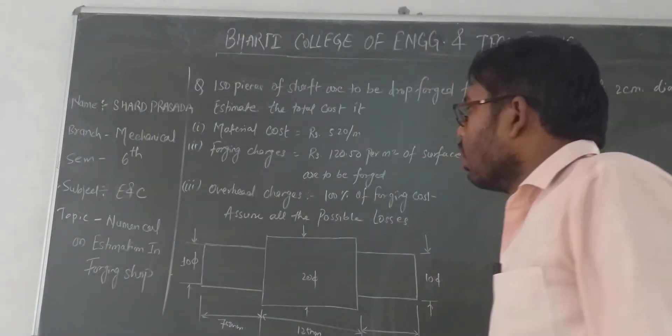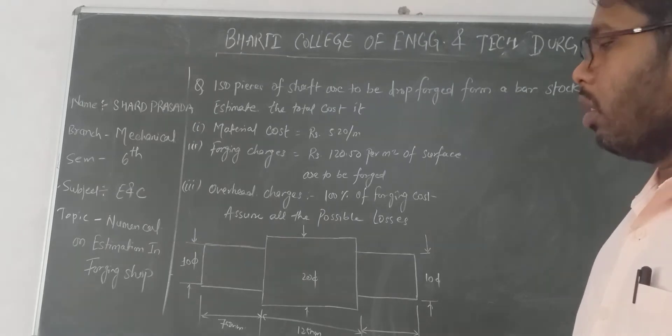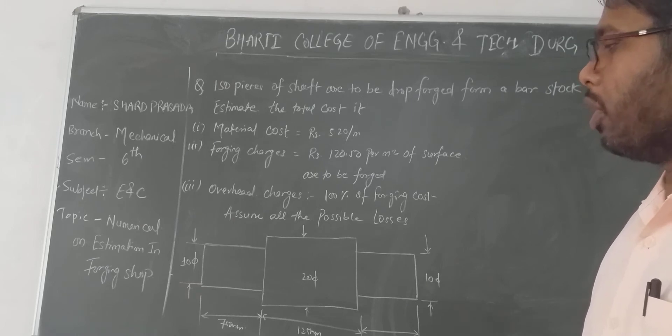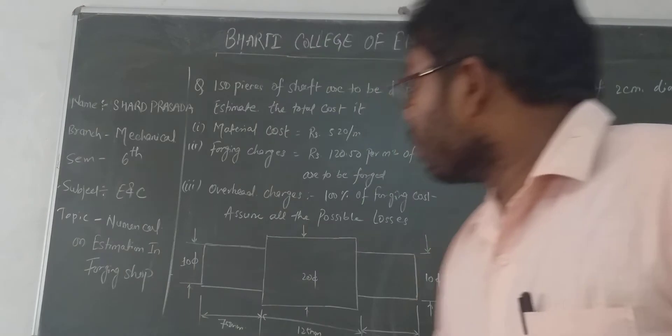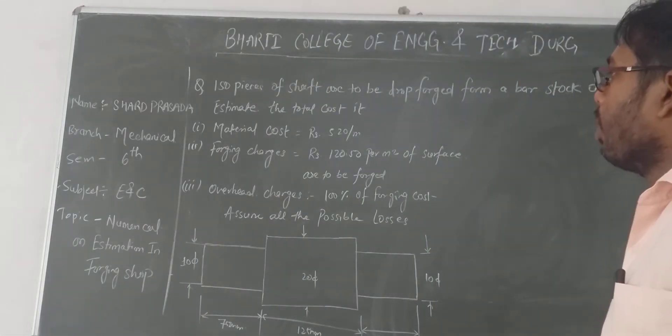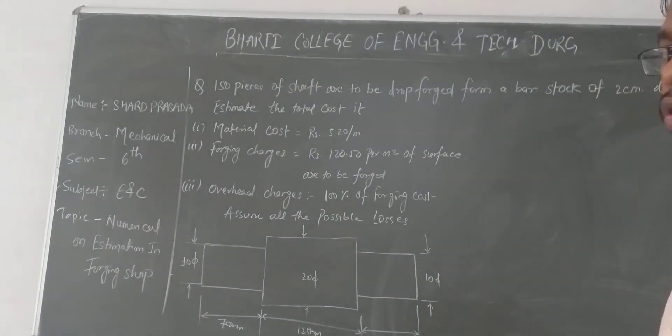Today's topic is Estimating and Costing. The topic is Estimation in Forging Shaft. A question is: 150 pieces of shaft are to be drop forged from a bar stock of 2 cm diameter.